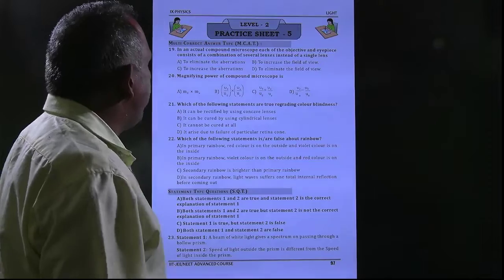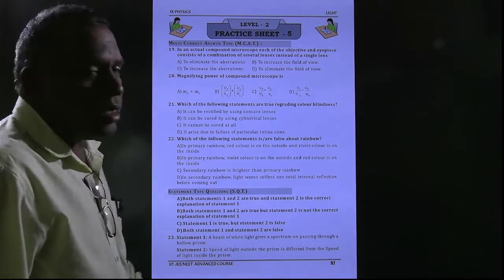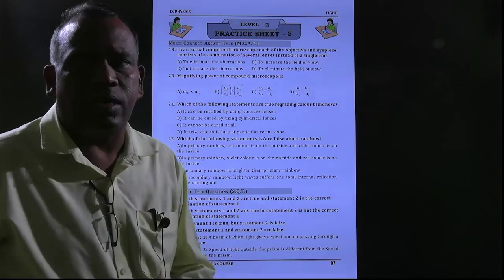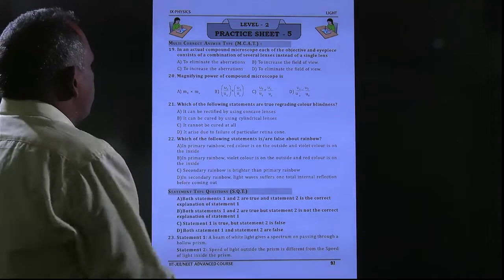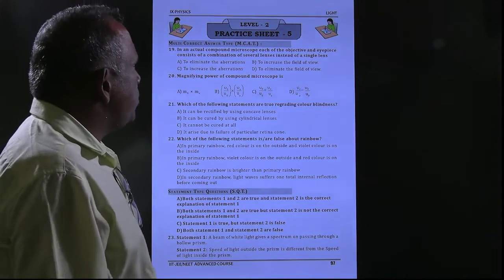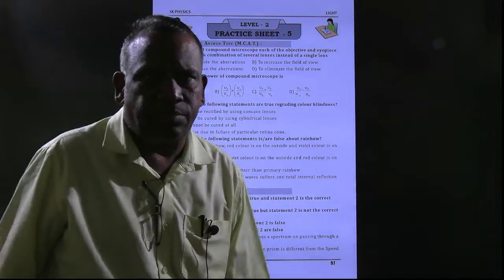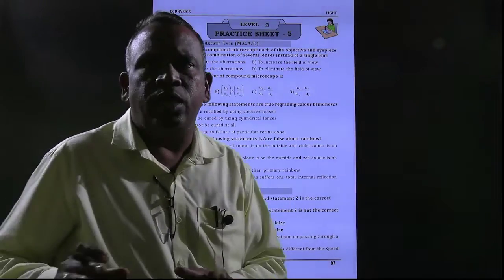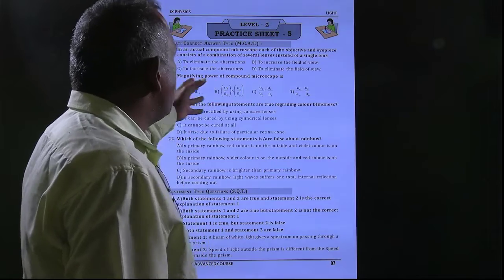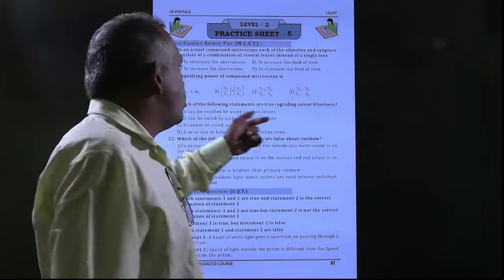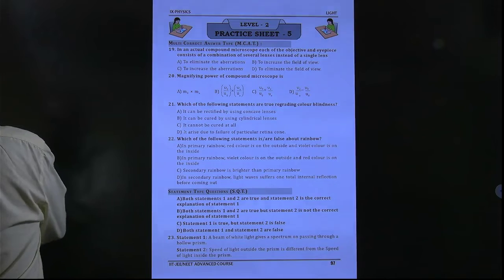Now come to practice sheet 5 Level 2 questions. In Level 2 we have multi-correct answer type questions — more than one correct answer is supposed to be selected. See the 19th question: in an actual compound microscope, each of the objective and eyepiece consists of a combination of several lenses instead of a single lens. Why is this combination used instead of a single lens? That is the question.